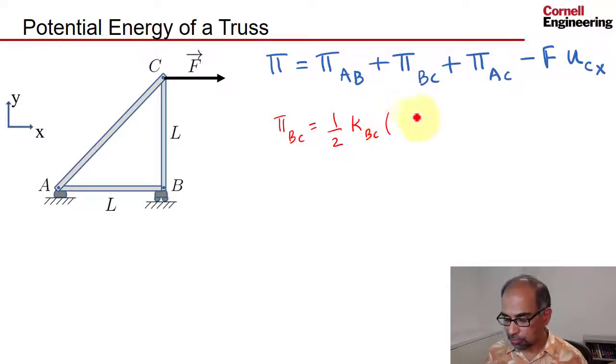I'll write the result and then explain it to you. This is going to be (U_CY - U_BY)². This term in the brackets without the square is the extension of BC in terms of the pin displacements.